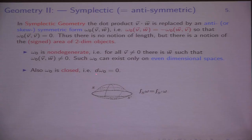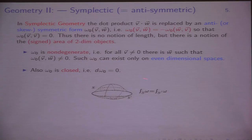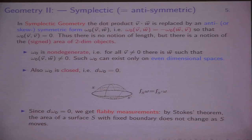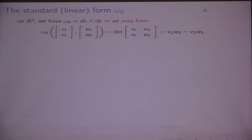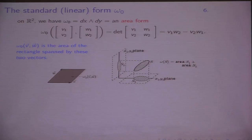The next key property is that ω₀ is a closed two-form, meaning its derivative is zero. If you integrate this form — if you take the area of a little piece of surface with boundary — it only depends on the boundary. So if you move the surface S to S′, you get the same area. That means you get very flabby measurements: you're measuring areas of surfaces but you can move the surfaces without changing the area, as long as you fix the boundary. The standard measurement is the standard linear form ω₀ = dx∧dy, an area form. Given two vectors, it's basically the determinant of their coordinates — the signed area spanned by them.